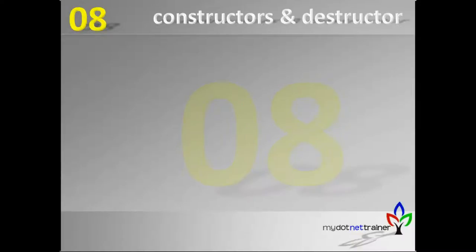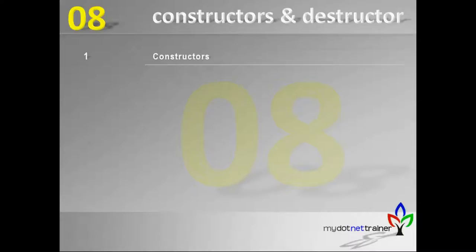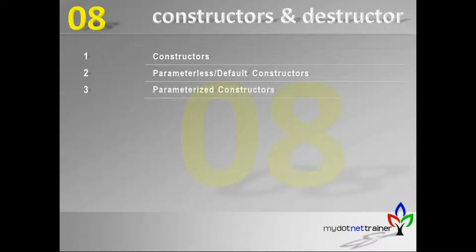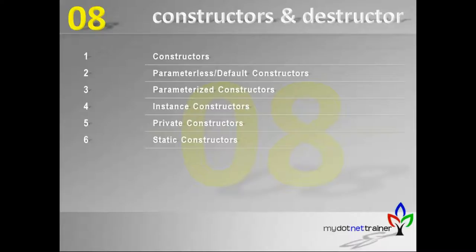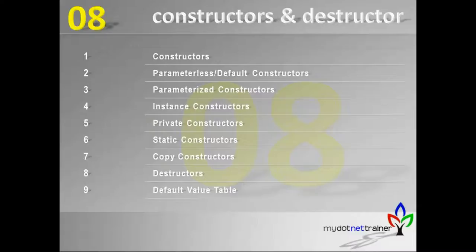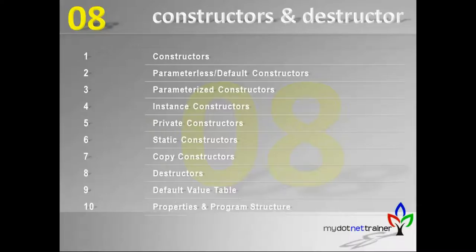We are in session eight today. In this session we will look into constructors and destructors in general. We'll see a complete overview of constructors, starting with parameter-less or default constructors, parameterized constructors, instance constructors, private constructors, static constructors, copy constructors, and finally destructors. We'll also see the default value table that .NET carries for all variables in case you don't initialize them, and we'll look at properties and program structure.